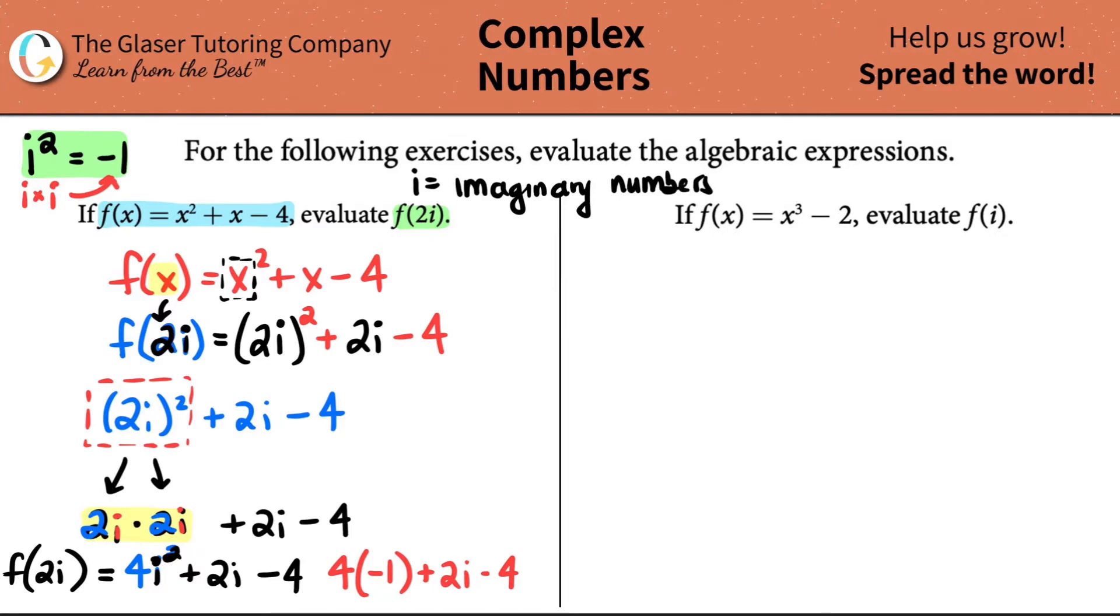And now just clean up the math. And you know what I'm going to do? I'm just going to put this up here just so that we can go down. 4 times a negative 1 is negative 4 plus 2i minus 4. And let's now group together common numbers. I have a negative 4 and I have a negative 4. So negative 4 minus 4 is a negative 8. So this would be negative 8 plus 2i. And that is your final answer.